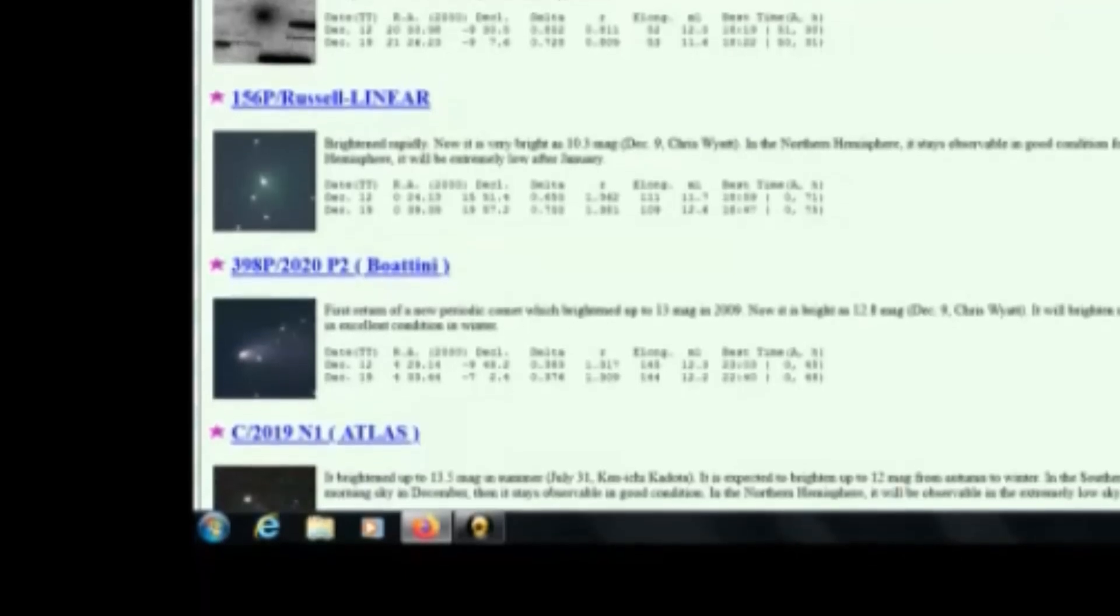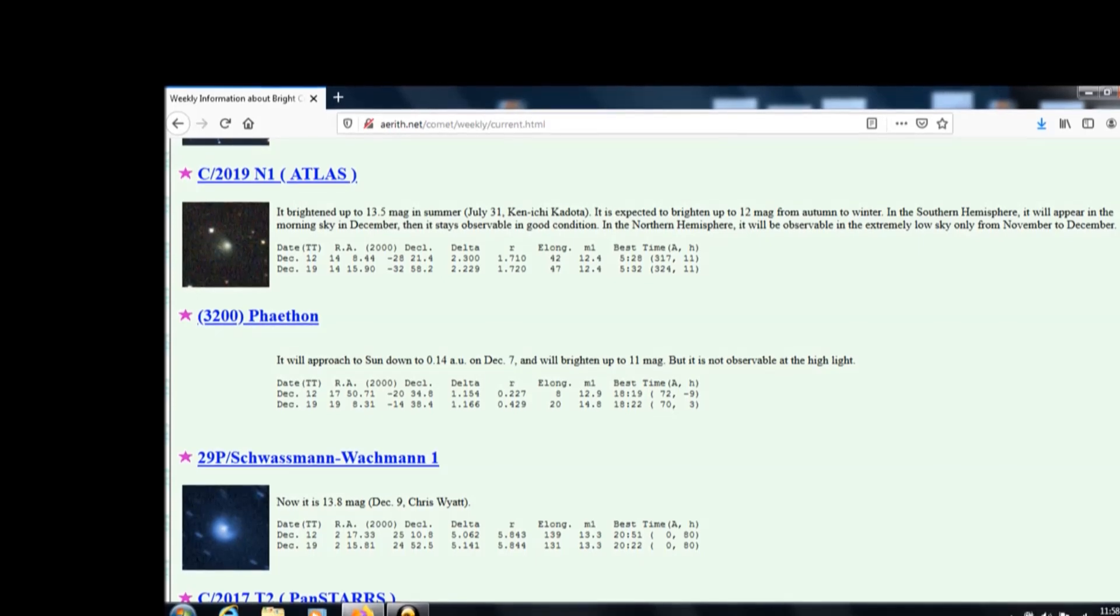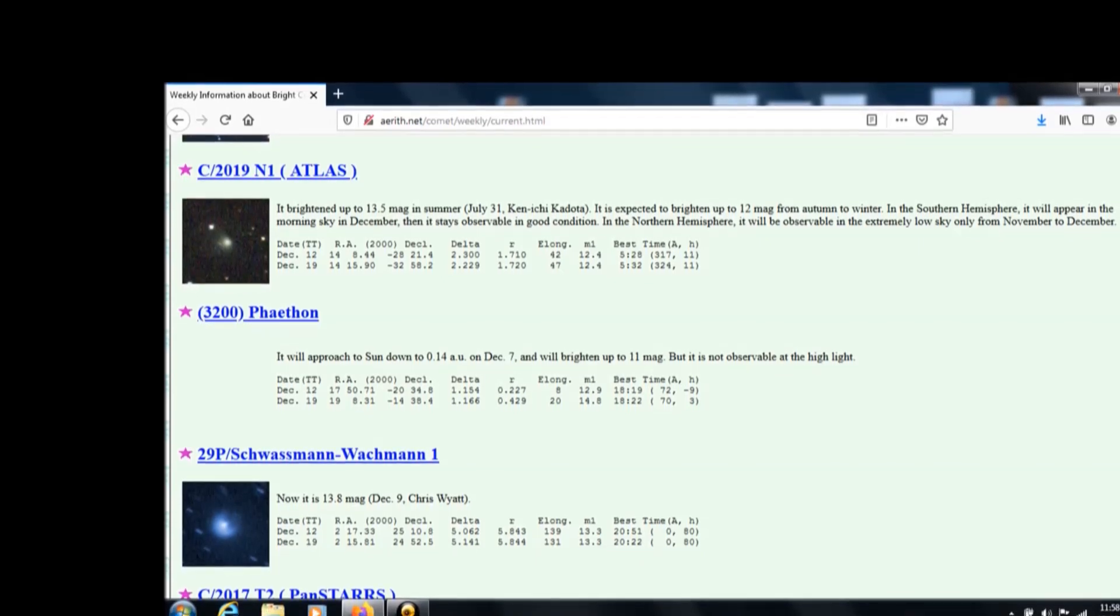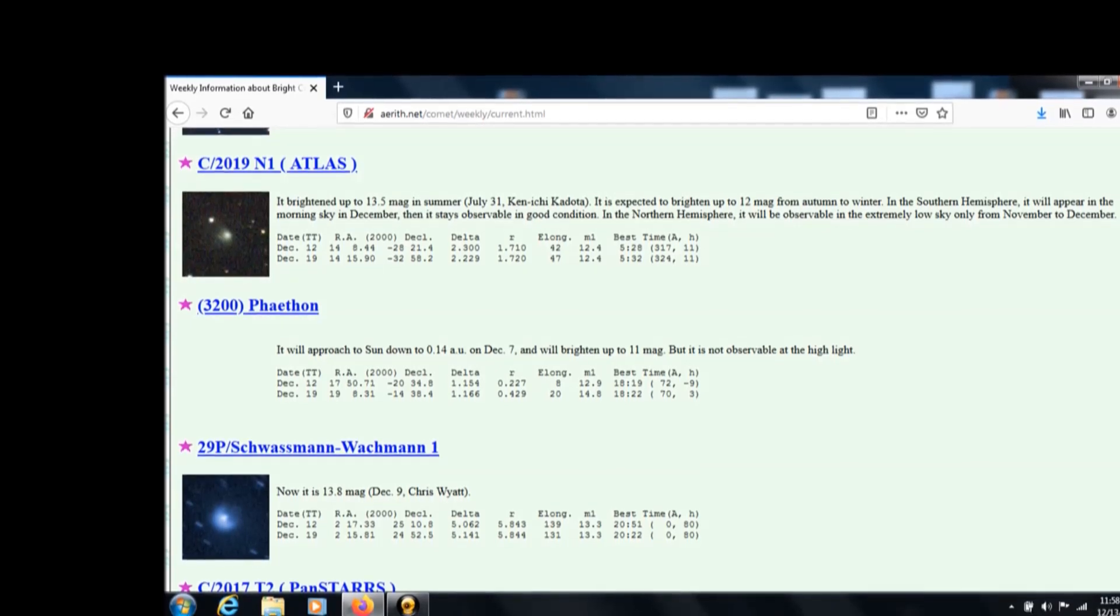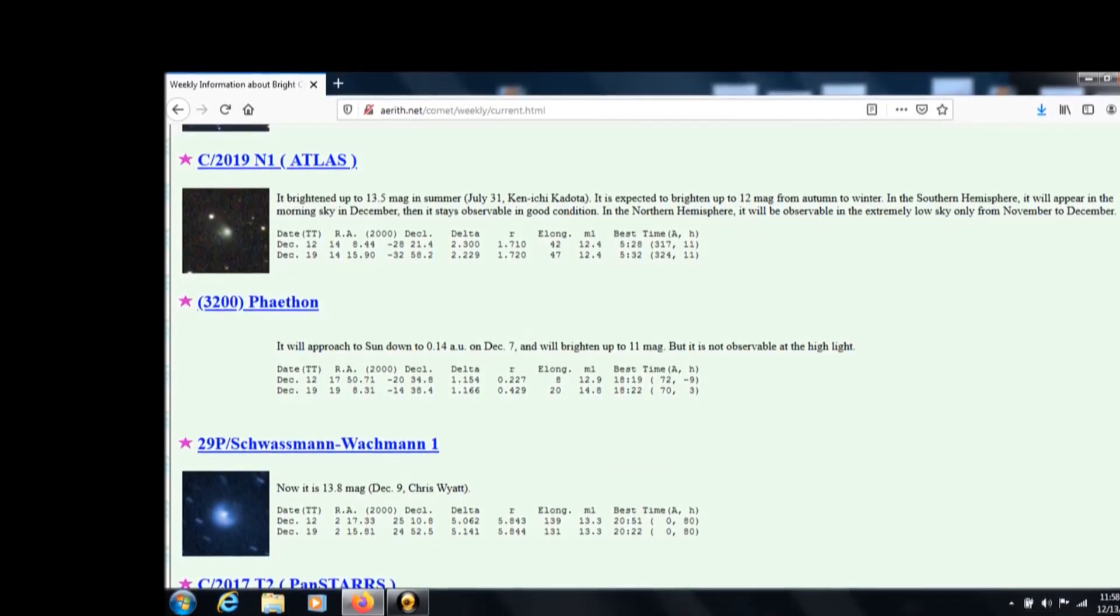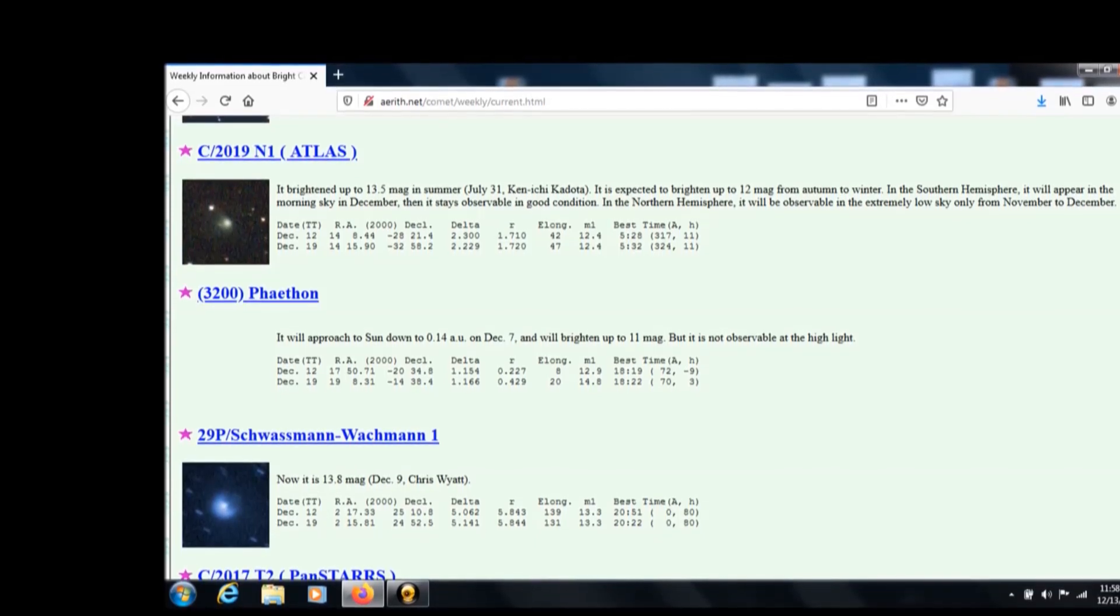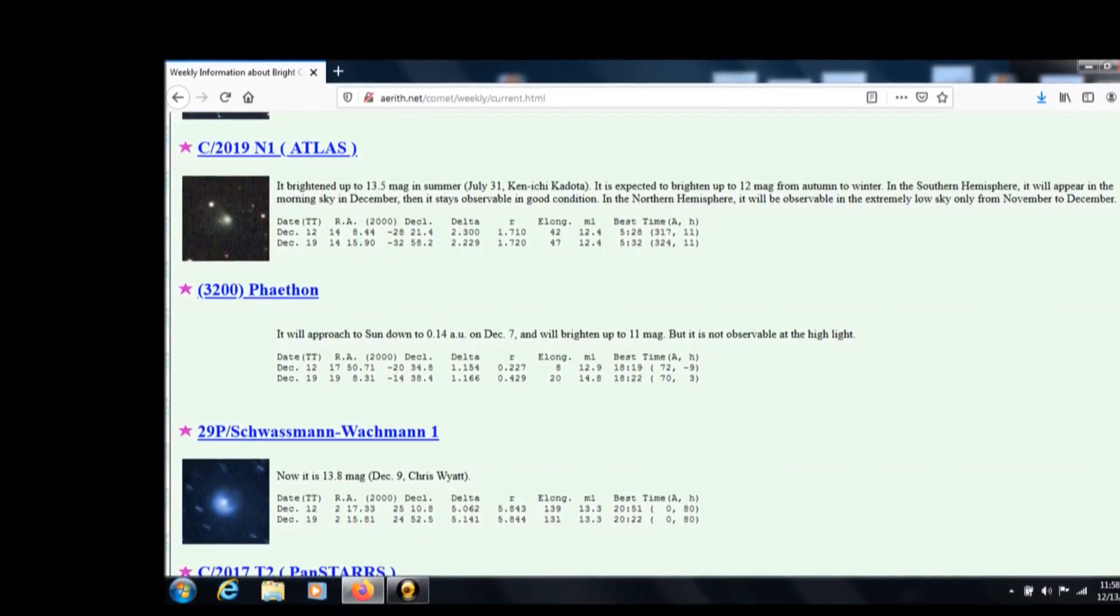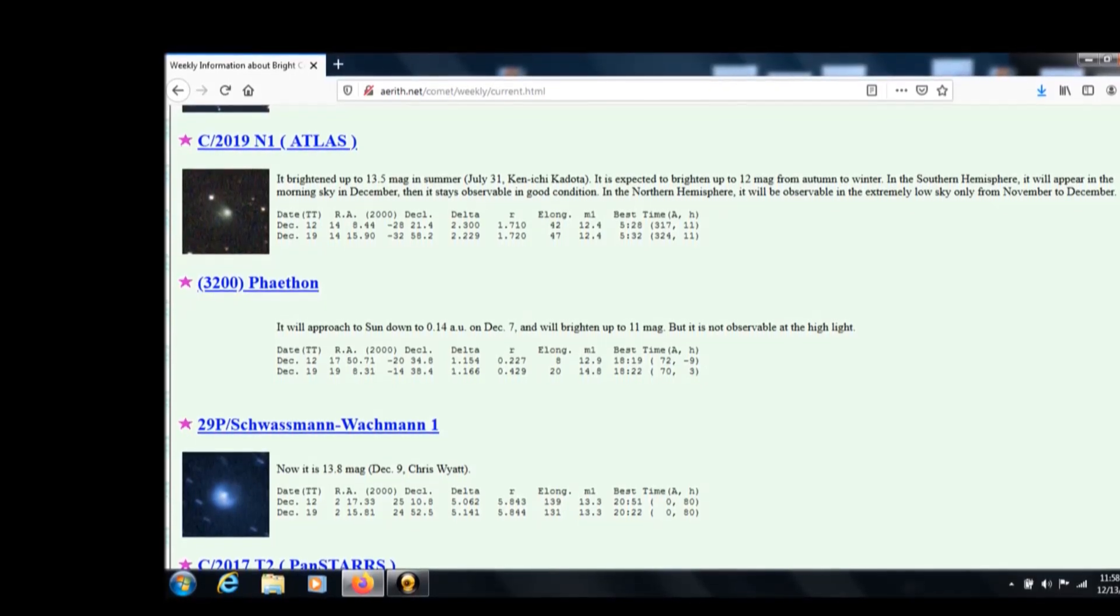Then there's C19N1 Atlas, another Atlas, brightening up to 13.5. In the summer of July 31st, however, in December, is visible in the morning sky. Will stay observable in good conditions in the northern hemisphere, but very low sky in November and December.